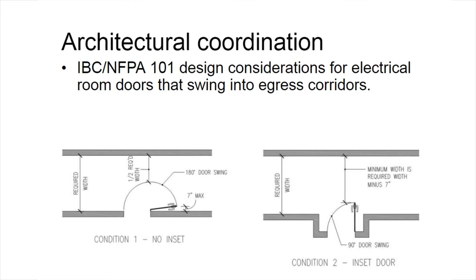IBC International Building Code and NFPA 101 Life Safety Code considerations apply when designing electrical rooms. The door needs to swing out, and you must have at least half the required width available once the door is in the 90-degree open position. Another option is to have an inset for the door with the minimum required width plus seven inches. The inset may affect the size of your room and the layout of your equipment. With the door swinging out, corridors may need to be wider, which could affect the overall building size and configuration.